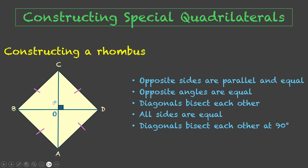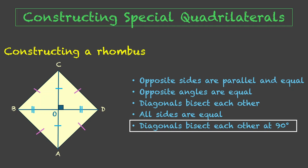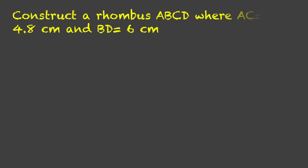Since the diagonals bisect each other, OC = OA and OB = OD. We are going to use these properties, especially this one, since more often we are given the diagonals and we need to construct a rhombus from them. Let us see one example: construct a rhombus ABCD where AC = 4.8 and BD = 6 centimeters.